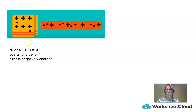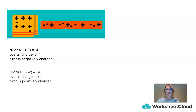If we have a look at the ruler, we have four positive charges and eight negative charges. So four plus negative eight gives us negative four. This means that the overall charge on the ruler is negative four, so the ruler is negatively charged. If we have a look at the fabric, the cloth has six pluses and two minuses. So six plus negative two gives us plus four. That means that the overall charge on the cloth is plus four, and the cloth is positively charged.